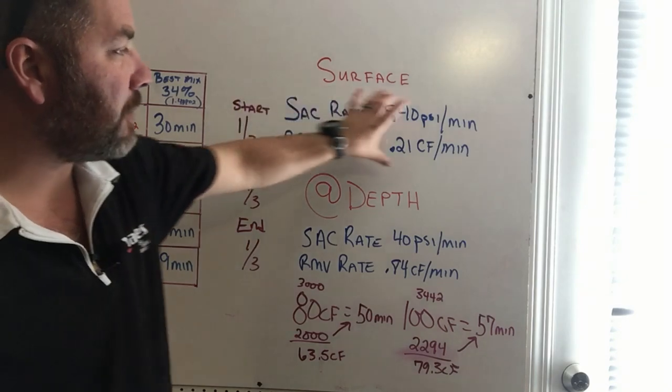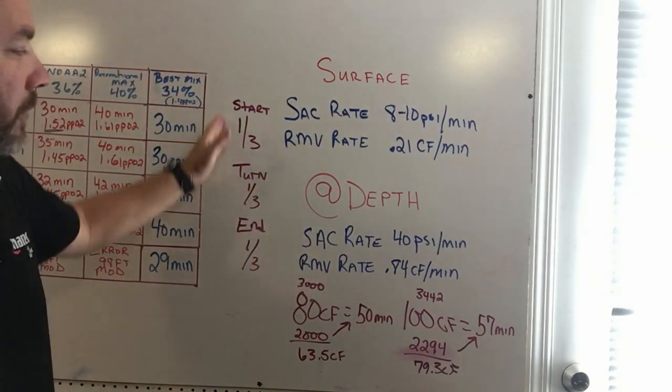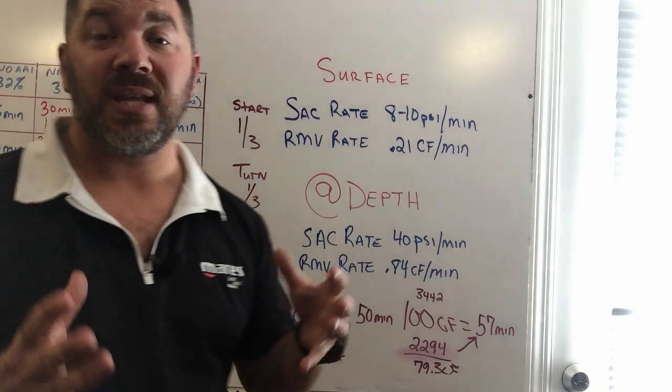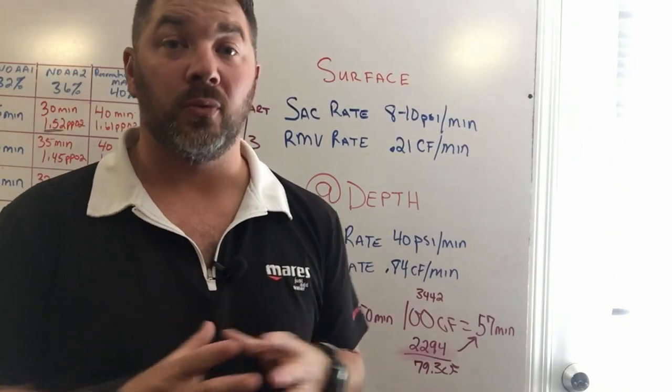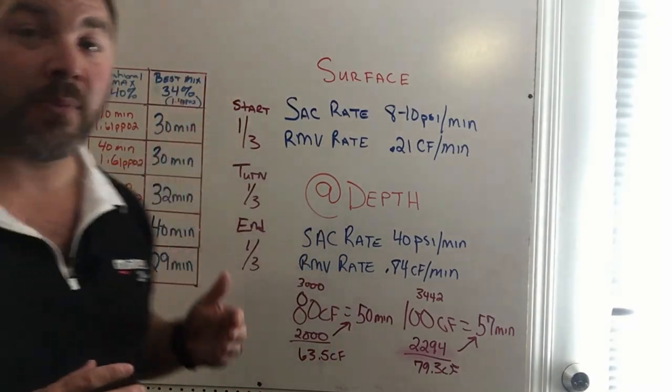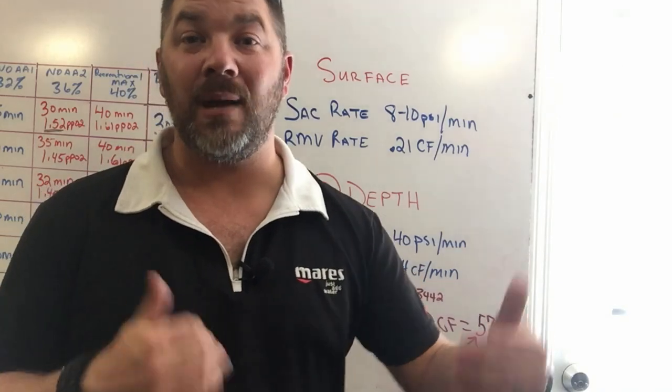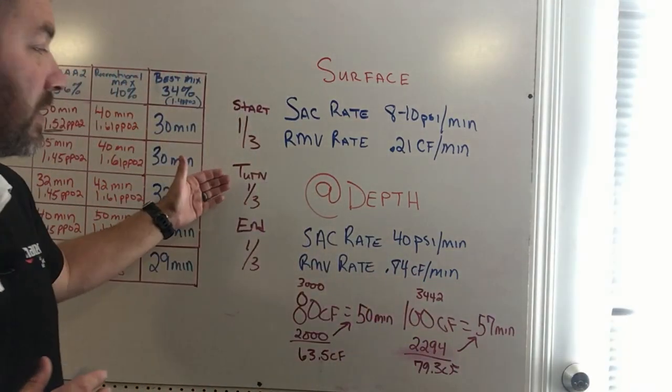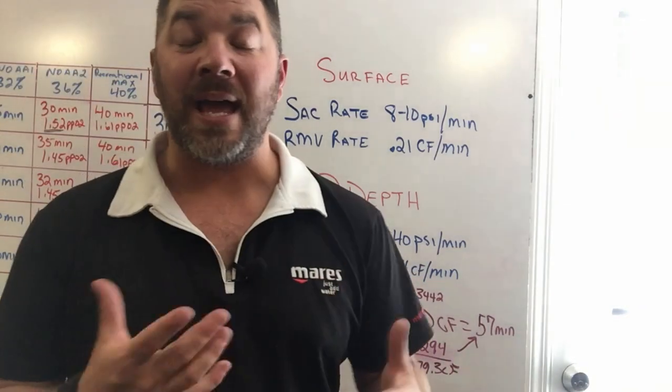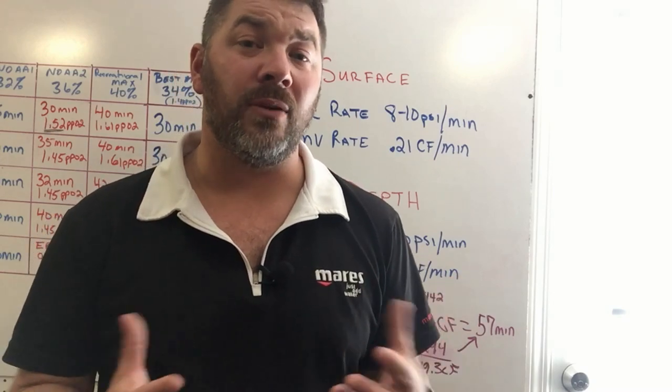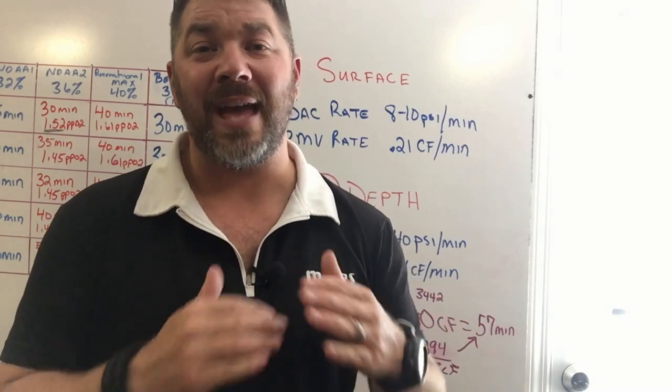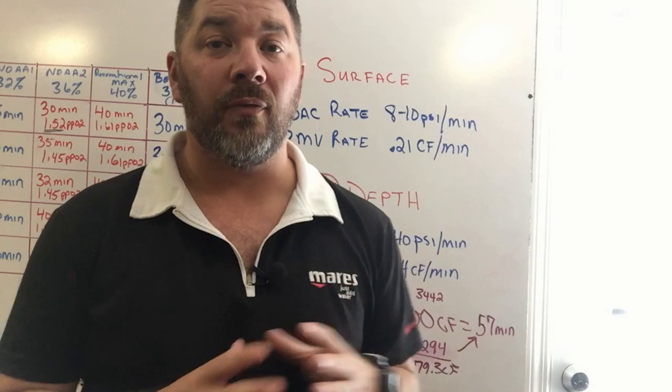My personal SAC rate and RMV rate I'm listing up here at the top. I need to throw this in real quick: all the dives that I do are based off the rule of thirds. I have a third of my tank pressure to actually use to get to my depth and do my dive, a second third to make it back to my exit point, and then a final third for emergencies and anything like that.